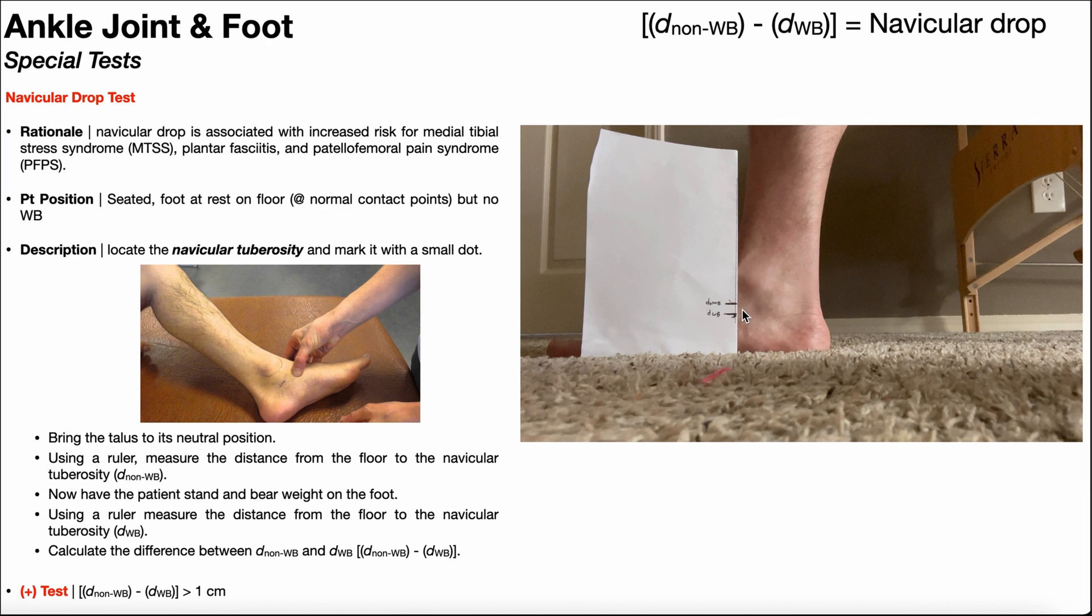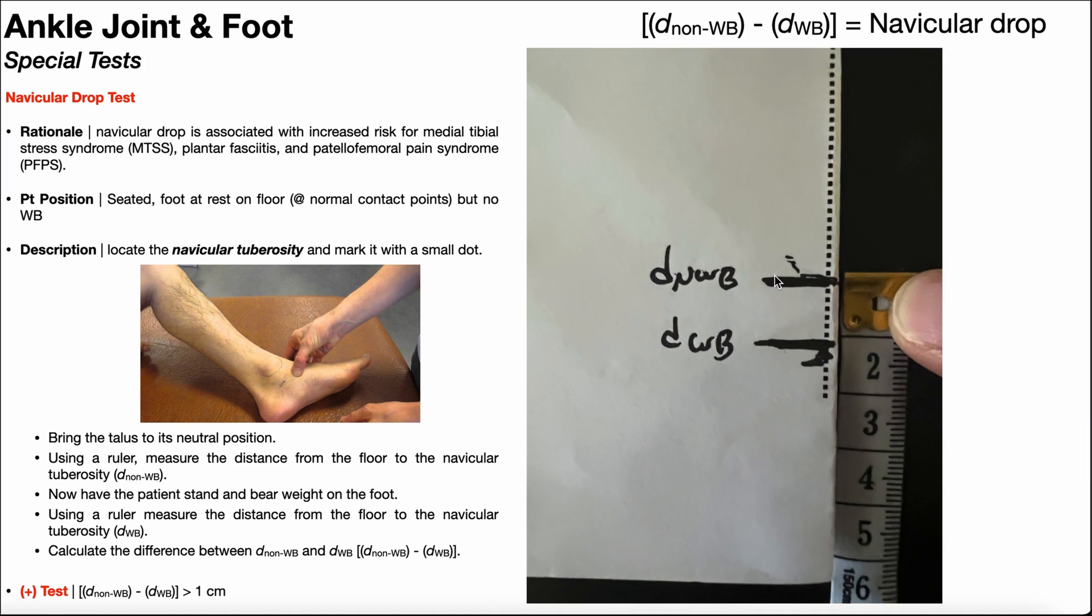So if you took the two measurements separately, wrote the numbers down, then you're going to subtract them and take the difference. What you do is you take the distance in non-weight-bearing and subtract the distance in weight-bearing, and that would be the navicular drop.